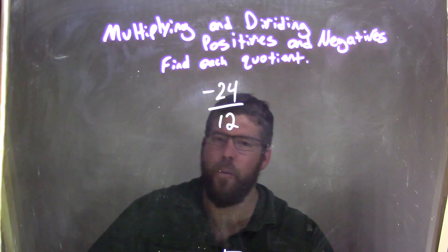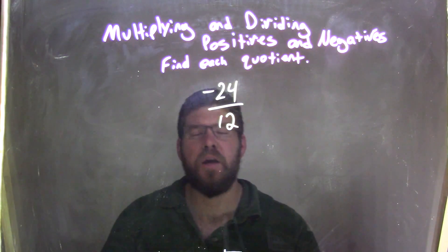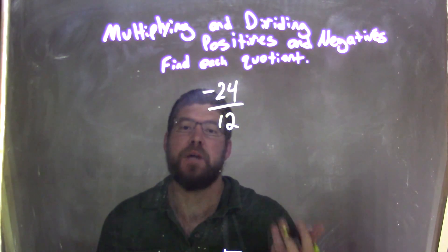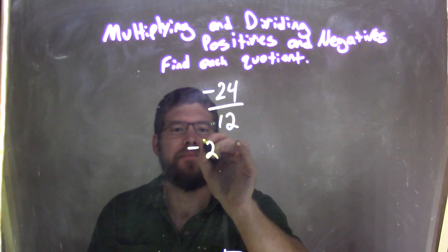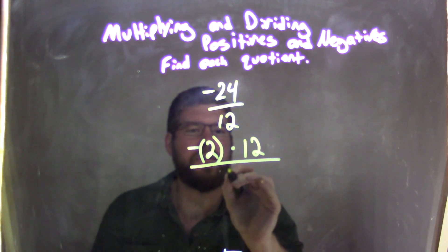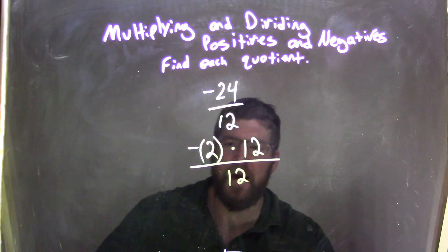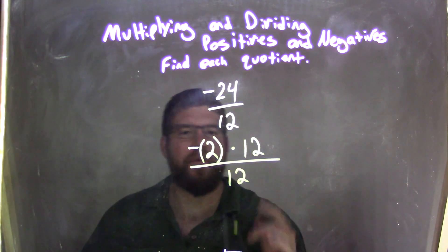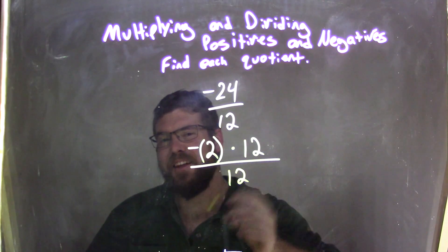But how can we see that? What's really going on? Well, 24 can be broken down to be 2 times 12, so we have a negative 2 on the outside times 12, all over 12. And so now, since we have 12 and 12 with like terms, we can just cancel them out.